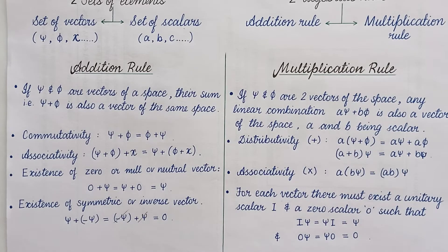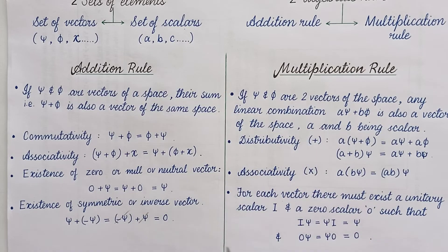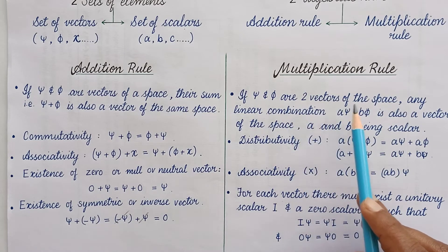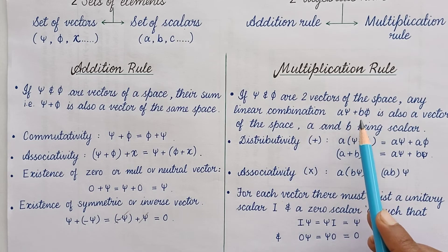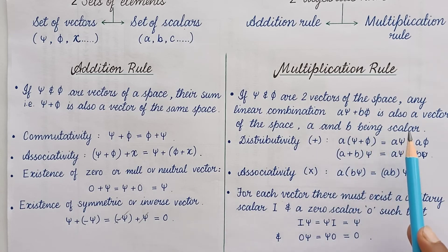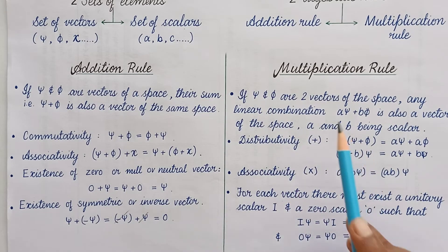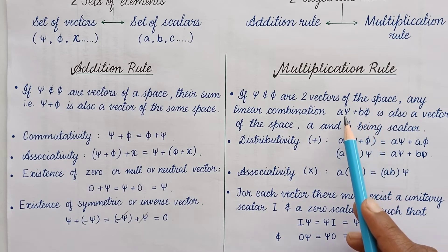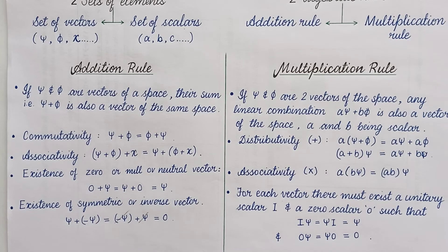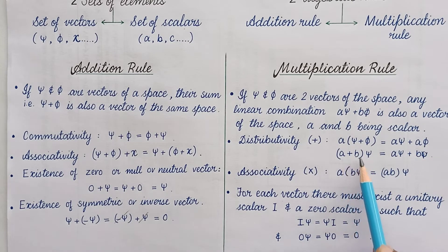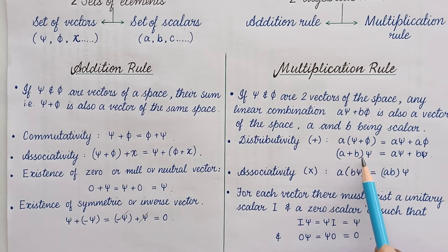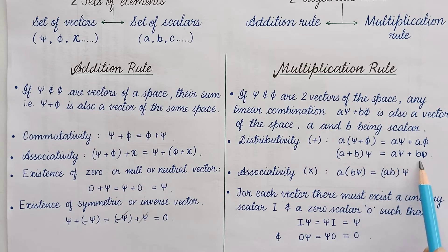Now coming to the multiplication rule. The multiplication of vectors by scalars gives these properties. Number one: if psi and phi are two vectors of the space, any linear combination a psi plus b phi is also a vector of the space, a and b being scalars. It also follows the distributive property with respect to addition: a times bracket psi plus phi gives a psi plus a phi, or a plus b bracket psi gives a psi plus b psi.